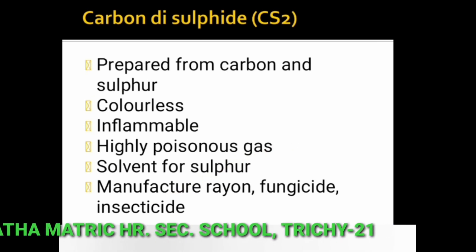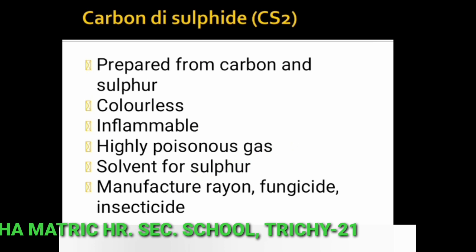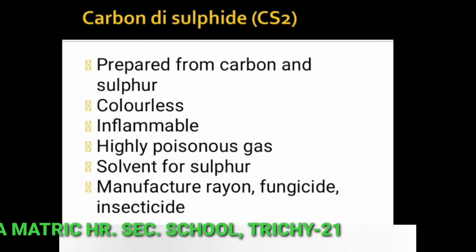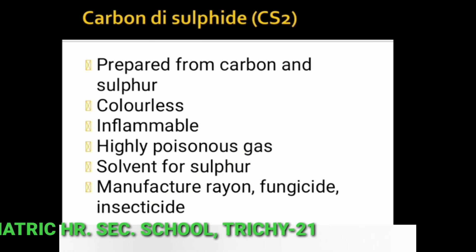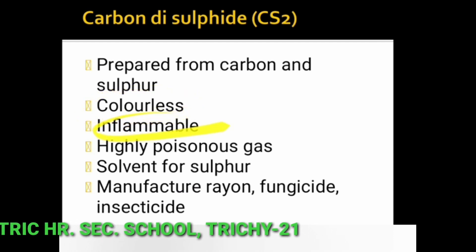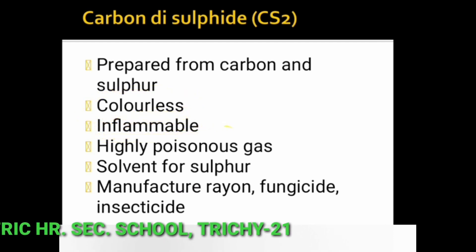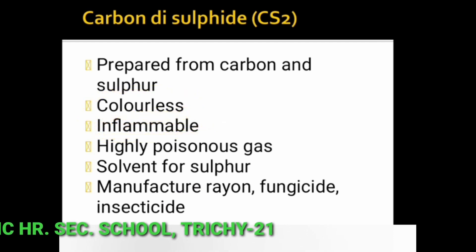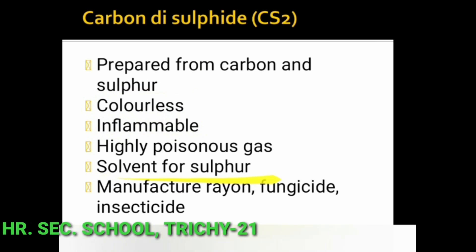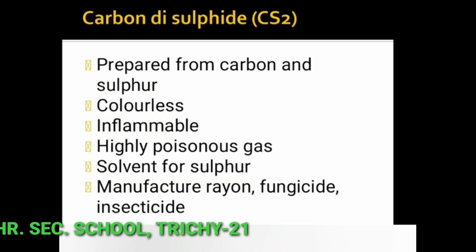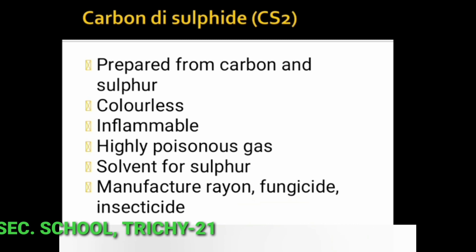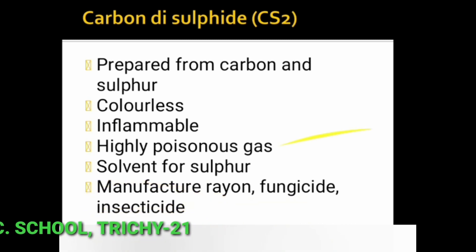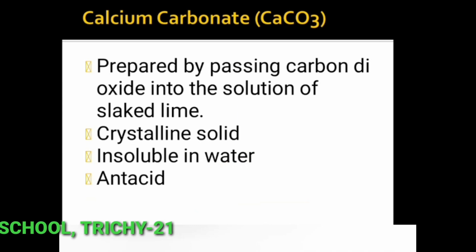Next compound is carbon disulfide (CS2). It is directly prepared from carbon and sulfur. It is a colorless, inflammable, and highly poisonous liquid. It is used as a solvent for sulfur and used to manufacture rayon, fungicide, and insecticide.